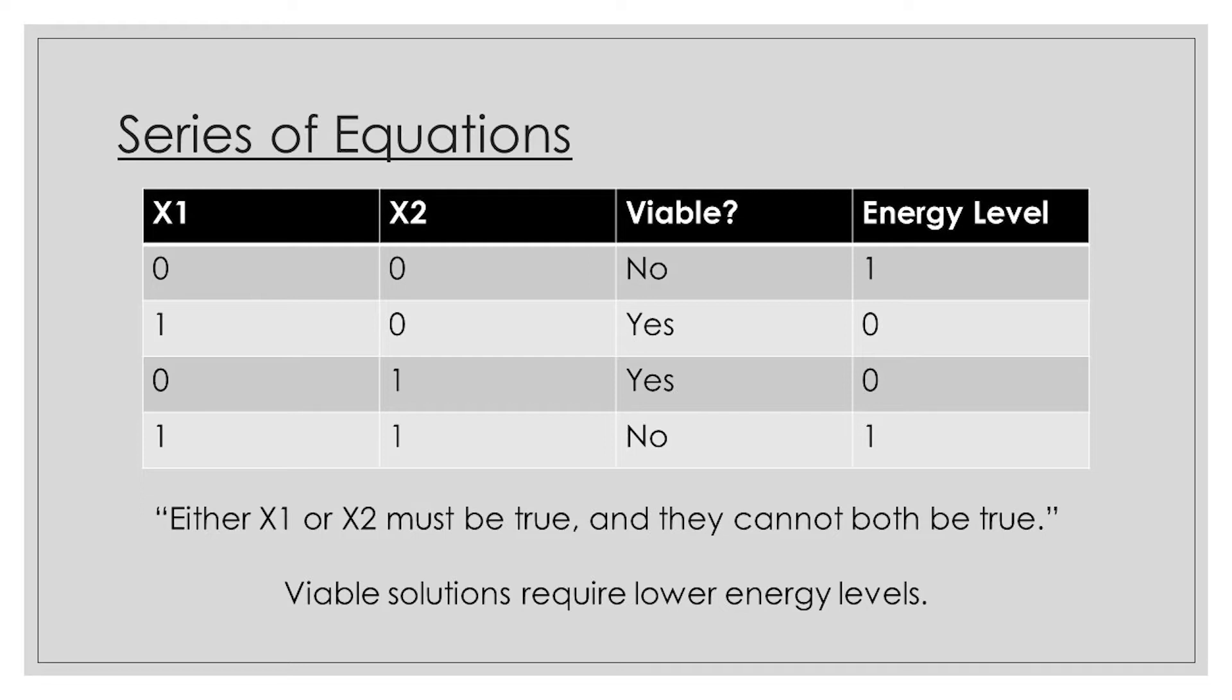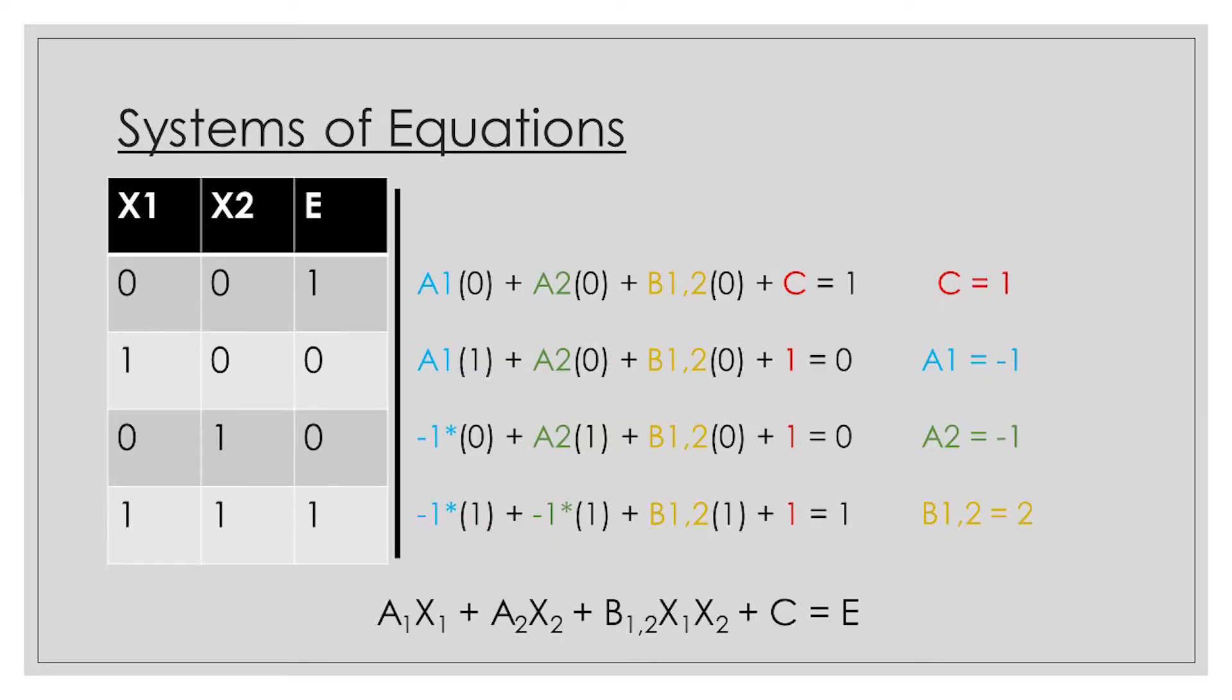So we have our energy values assigned. Now let's find out a1, a2, and b1,2's values. And this is where our system of equations comes in. The energy values that we just assigned to the possibilities above are supposed to be equal to their respective QUBO equations after plugging in the values of x1 and x2. As an example, let's look at our first possibility. In this one, both x1 and x2 are equal to 0, so we know the solution isn't viable. And the energy level is equal to 1. So we plug in x1 and x2, we set that equal to the energy level, and we get a1 times 0 plus a2 times 0 plus b1,2 times 0 plus c is equal to 1. All of the zeros cancel out, and we're left with c is equal to 1. So now in this first equation alone, we have found the value of our constant c.